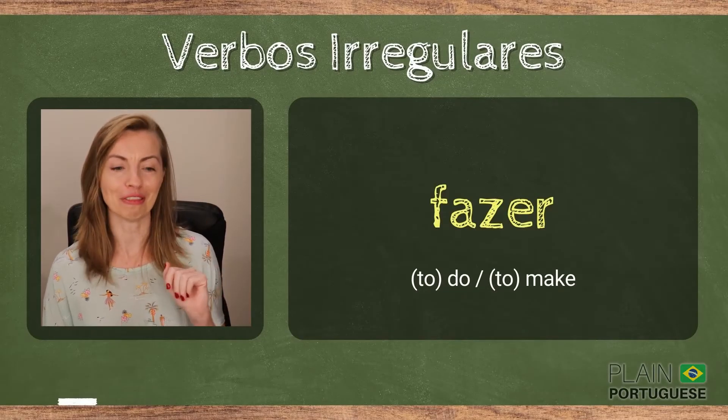Let me tell you something. It is a real struggle for Brazilians when learning English to understand the difference between these two verbs: DO and MAKE. As in, do homework, make a mess, do a favor, make a mistake. Do you want to know why? Because in Portuguese there is only one verb that is equivalent to both DO and MAKE — o verbo FAZER.